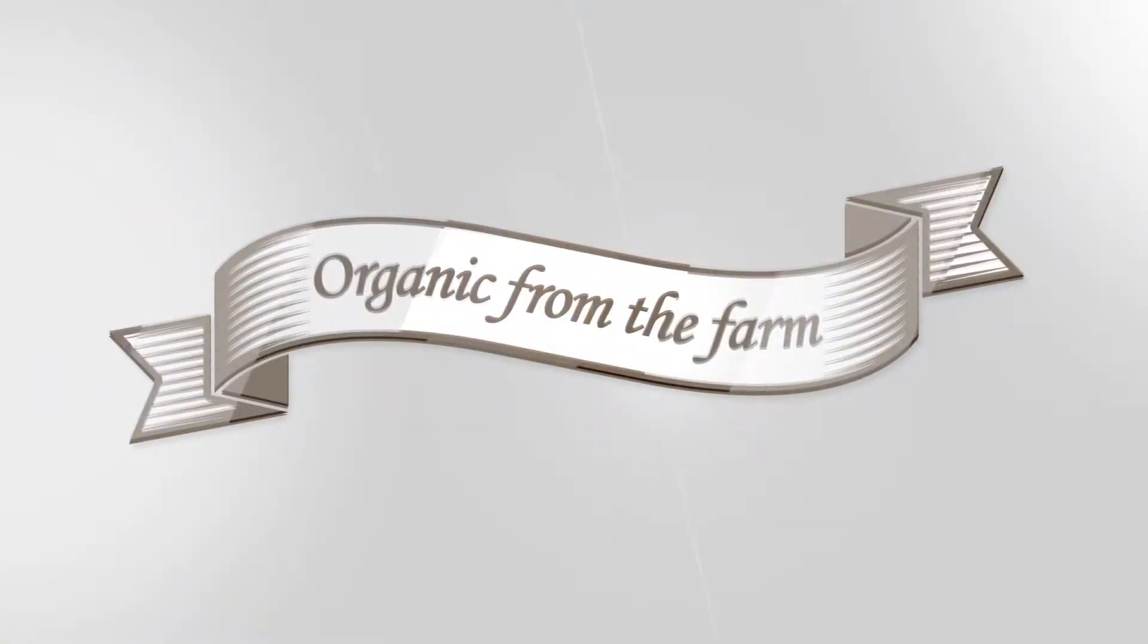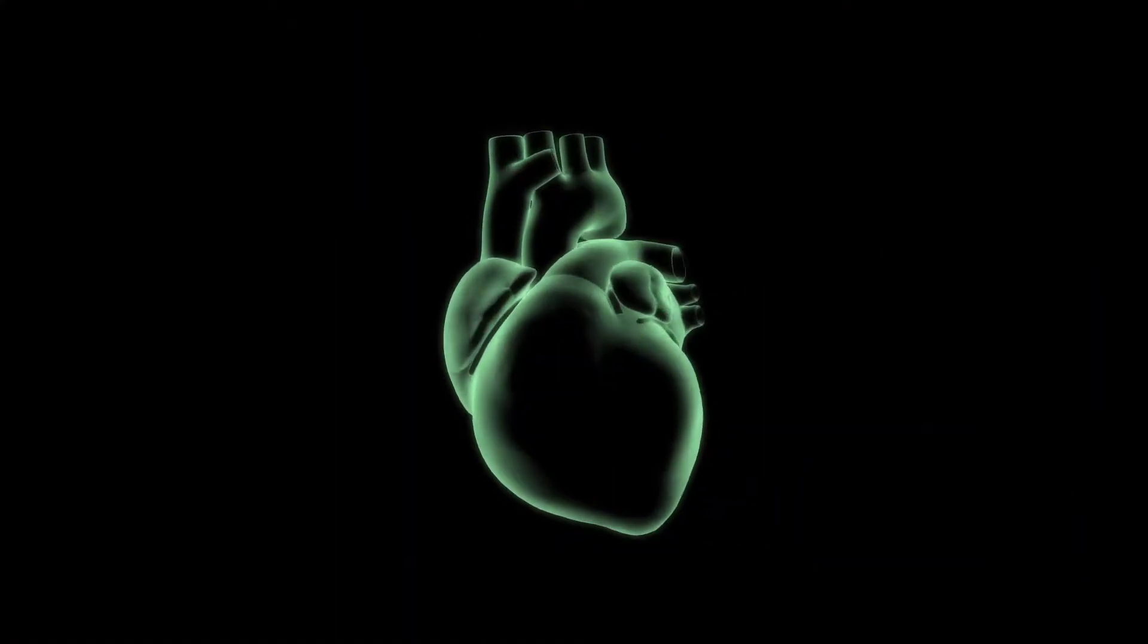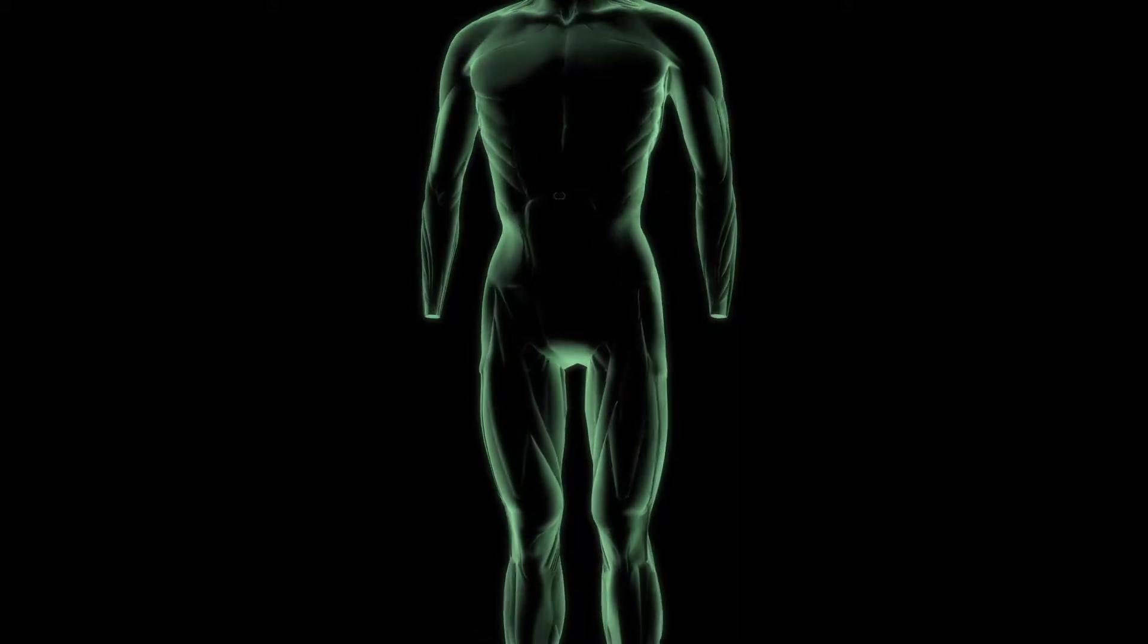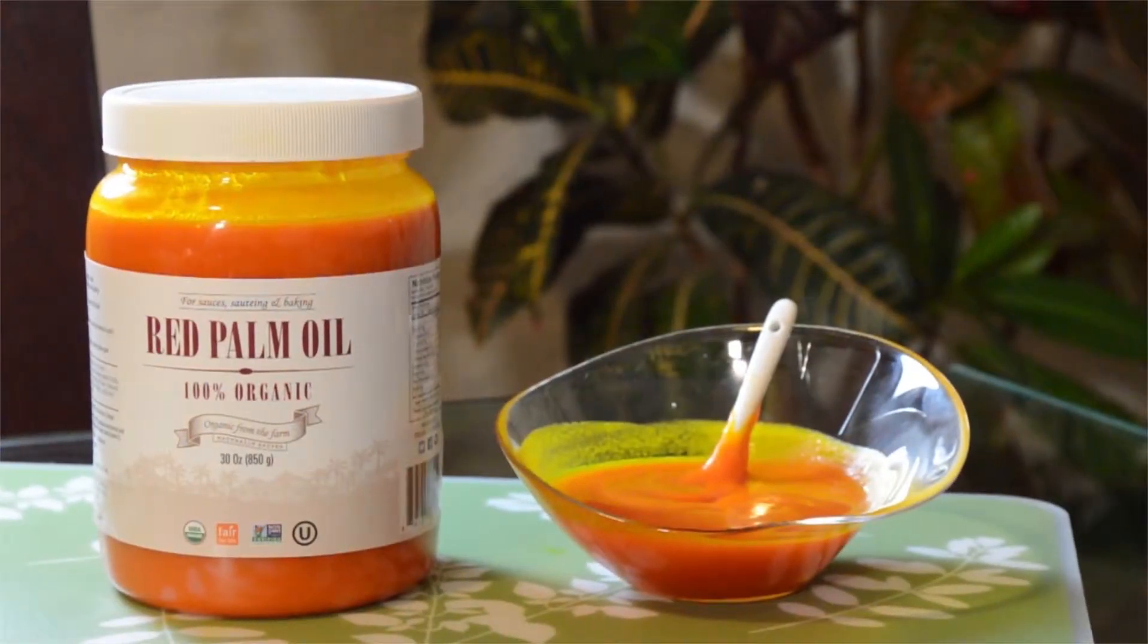Organic from the farm. What is this mysterious super oil that helps you prevent heart and brain disease and keeps your body from aging? It is an amazing product. Its name is red palm oil.